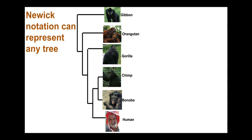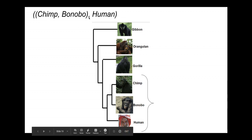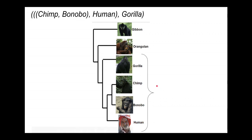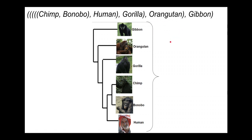Newick notation can be used to represent any tree. For chimps and bonobos, I write their names with a comma between them and surround them by parentheses to indicate they are a clade. I add humans next to them with a comma, then surround all of them by parentheses. Gorillas are the next level out — I add a comma and then gorillas, surrounded by parentheses. Then orangutans, and finally gibbons as the outermost layer. The parentheses accumulate at the ends. What's most important is indicating the proper clade structure.